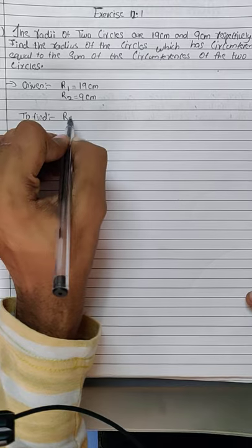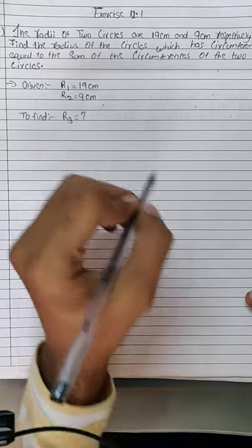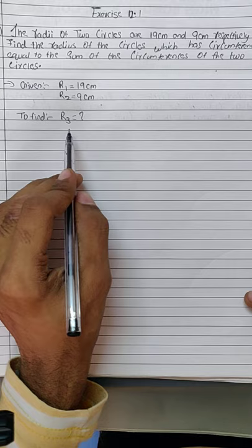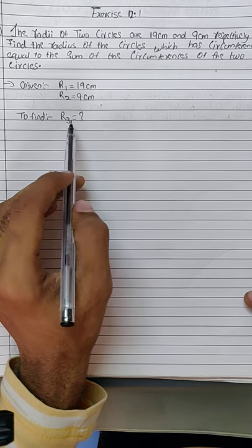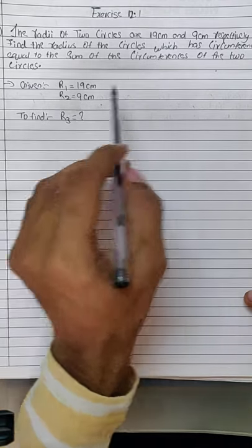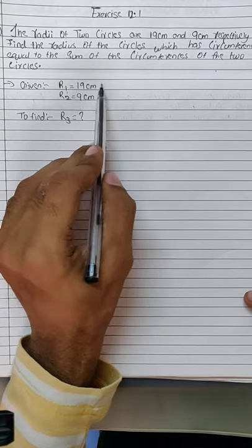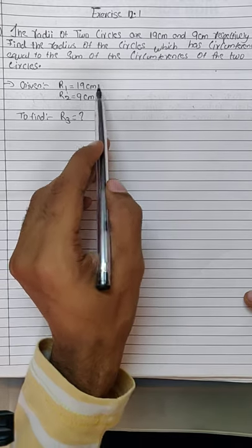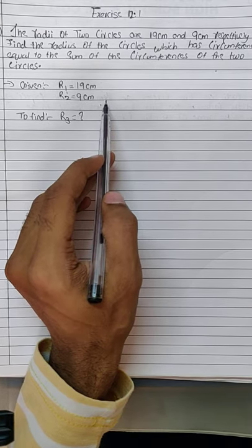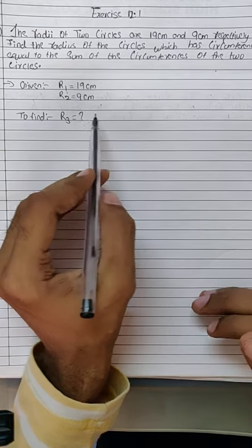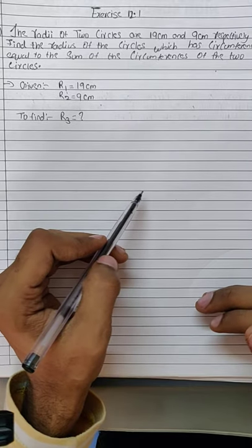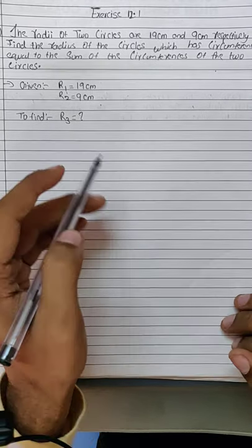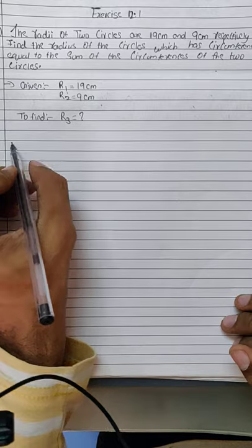r3 is nothing but the radius of the circle whose circumference is equal to the sum of the circumferences of the two circles. So, we will move on to the solution.